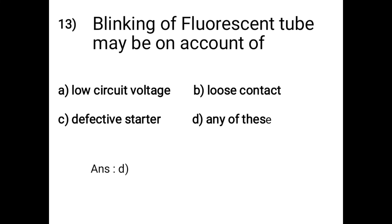Question 13: Blinking of a fluorescent tube may be on account of: A - low circuit voltage, B - loose contact, C - defective starter, D - any of these. The answer is option D: any of these. Blinking of a fluorescent tube may be on account of low circuit voltage, loose contact, and defective starter.